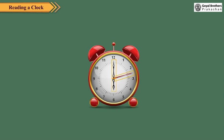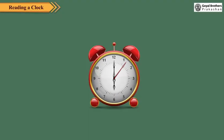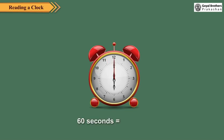It has three hands. The longest hand is called the second hand. It moves the fastest. It completes one round of the dial in 60 seconds or 1 minute. So, 60 seconds is equal to 1 minute.